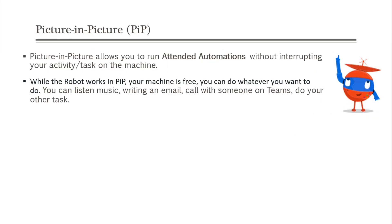Picture in Picture allows you to run attended automations without interrupting your activity or task on the machine. While the robot works in PIP, your machine is free. You can do whatever you want — listen to music, write an email, call someone on Teams, or do other tasks. So in one side your robot will process that automation, and on the same machine you can do your work. Parallely, both things will happen here. That is called picture in picture.